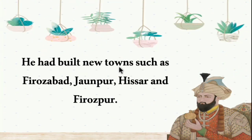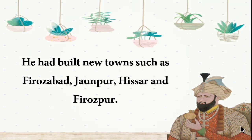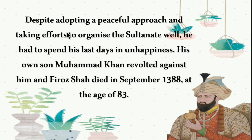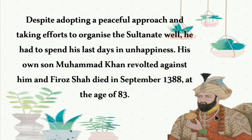Feroz Shah built new towns such as Ferozabad, Jaunpur, Hisar, and Ferozpur. Despite adopting a peaceful approach and organizing the Sultanate well, he spent his last days in unhappiness — his own son Mohammed Khan revolted against him. Feroz Shah Tughlaq died in September 1388 at the age of 83.